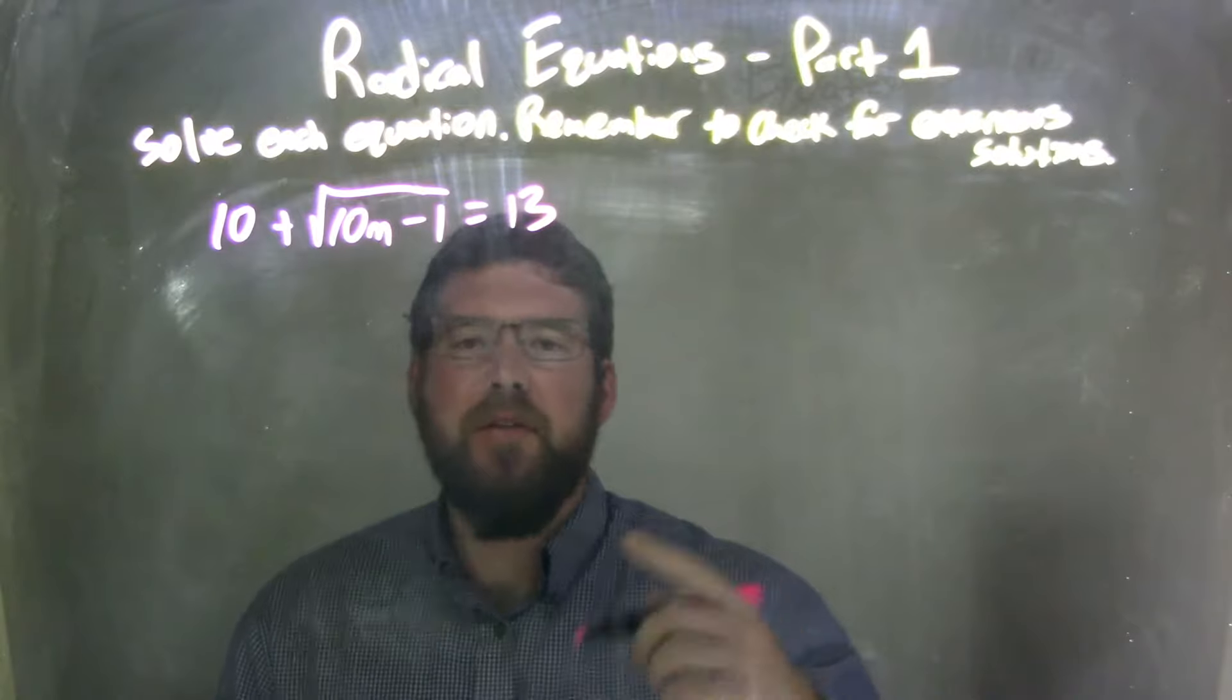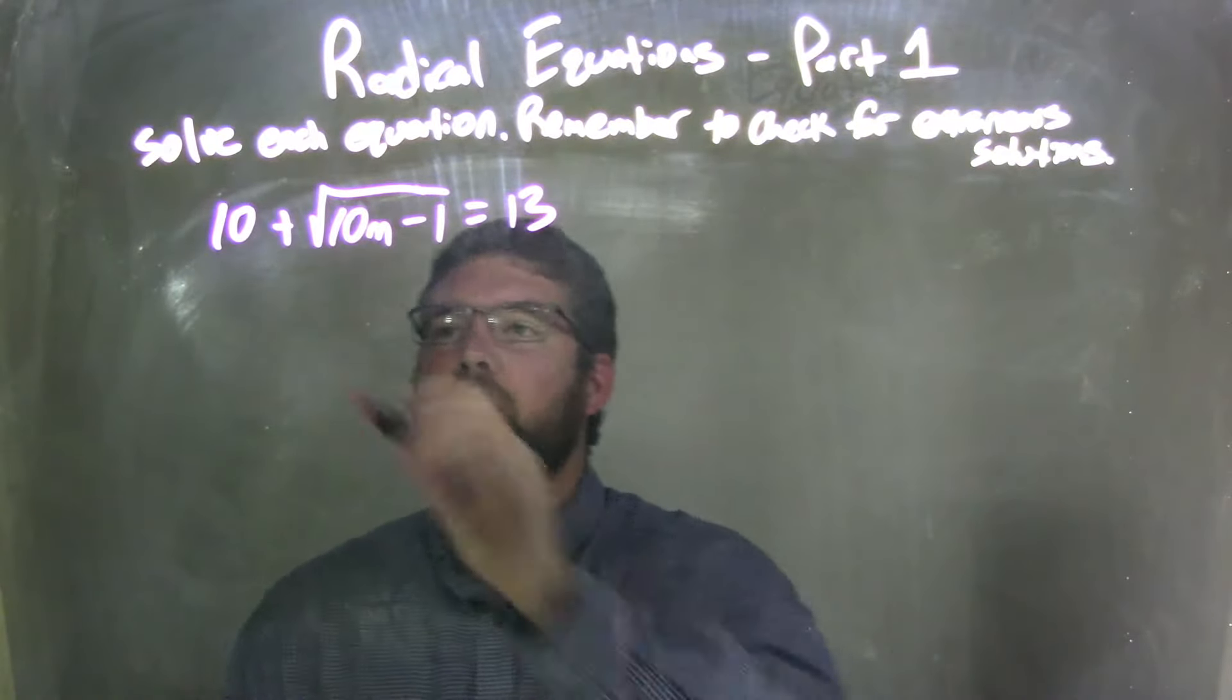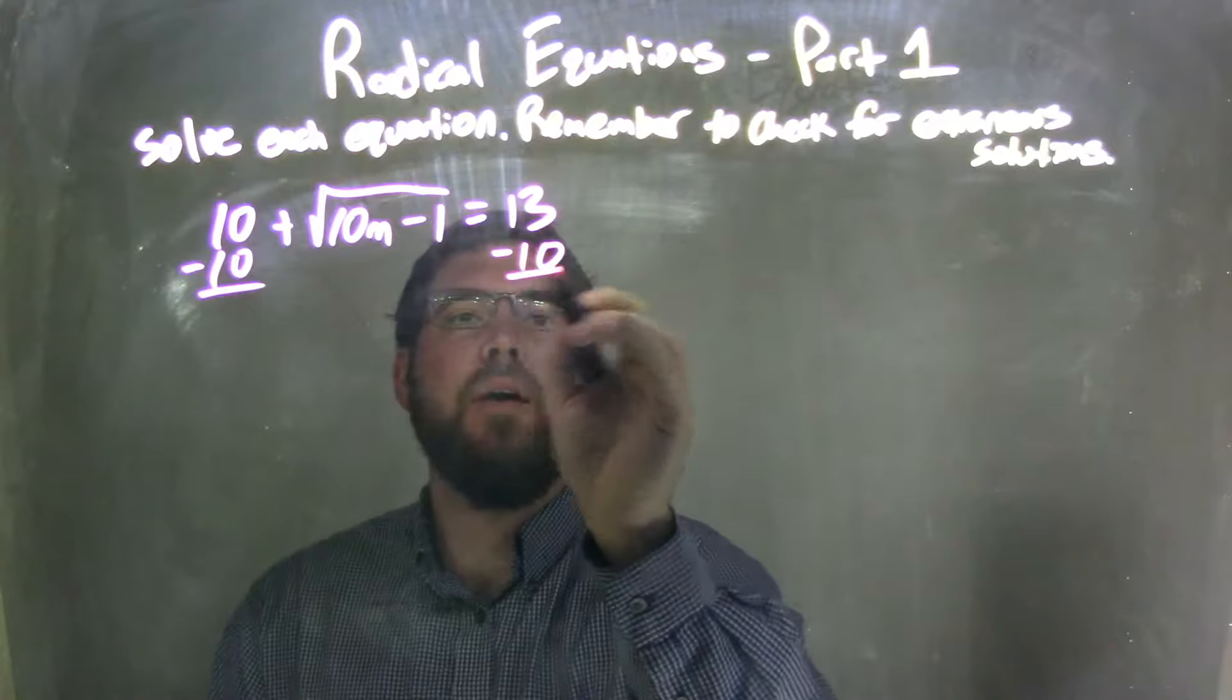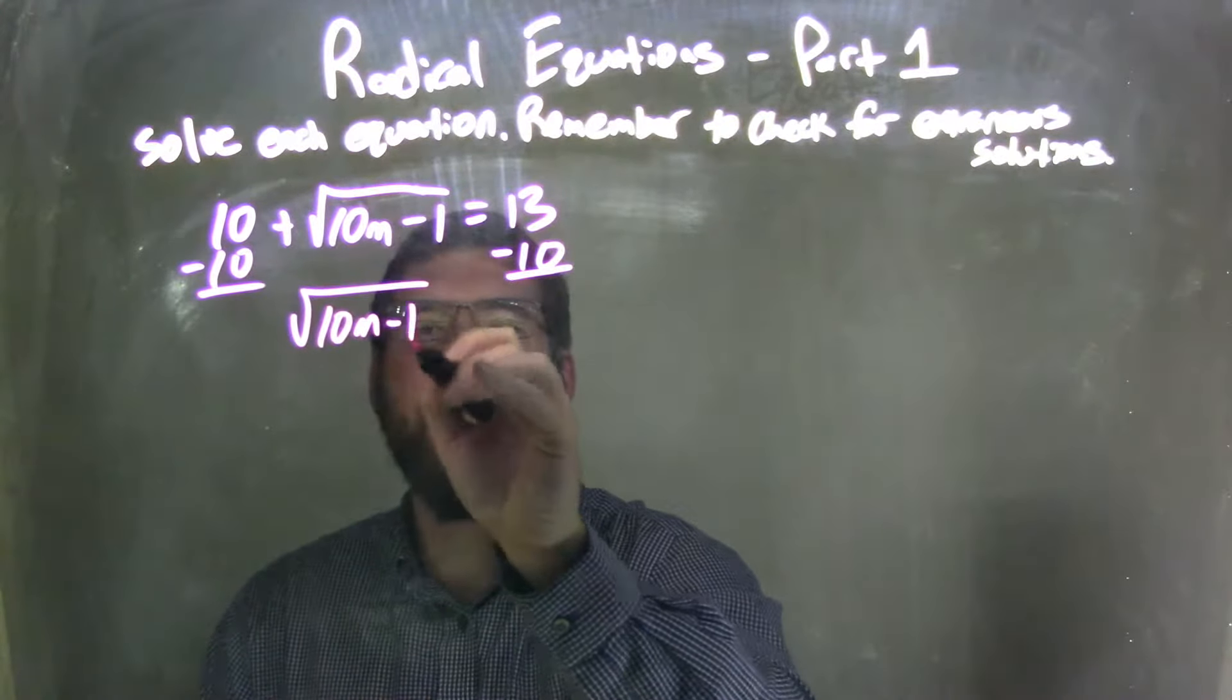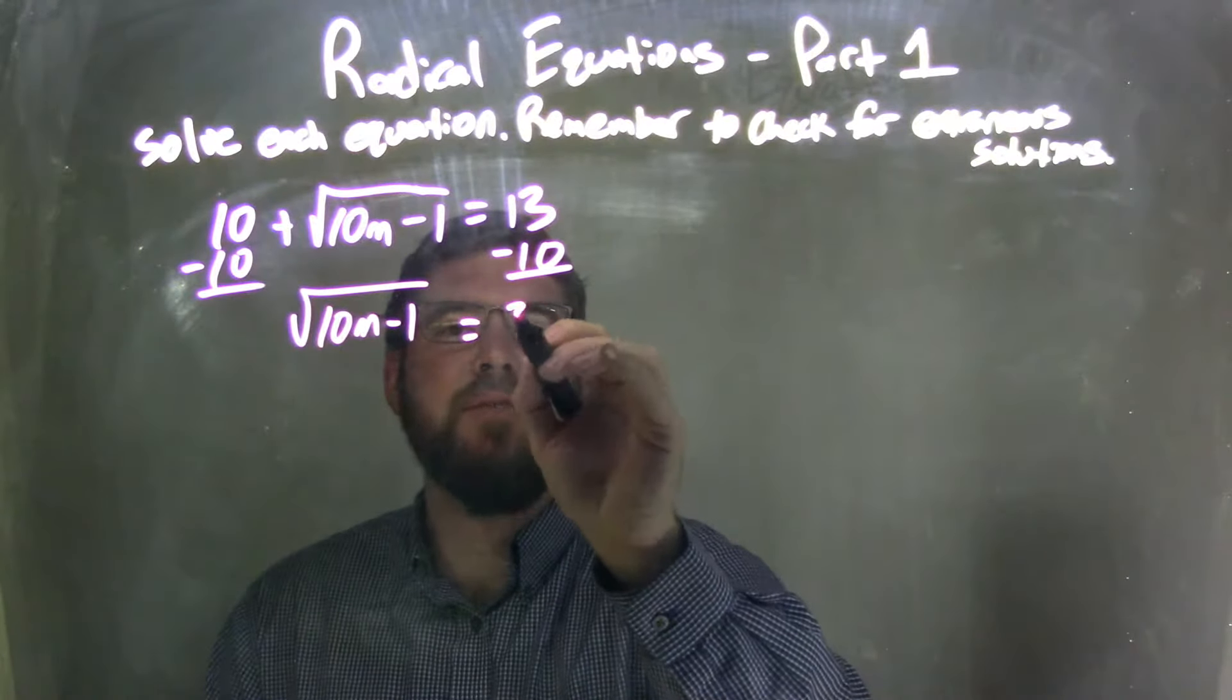Well, we first need to isolate the radical, the square root. So I'm going to subtract 10 from both sides. In doing so, I'm left with the square root of 10m minus 1 equals 13 minus 10, which is 3.